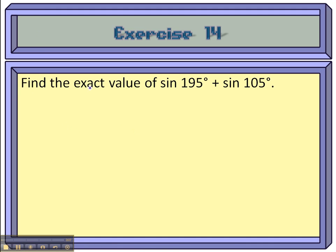On exercise 14, we want to find the exact value of sine of 195° plus the sine of 105°. Now we could probably do that now that we know a couple more angles off the unit circle, but what we're going to do is just use the sum to product formula.